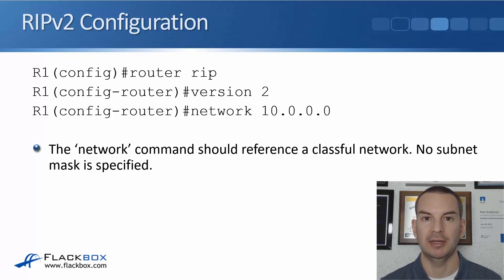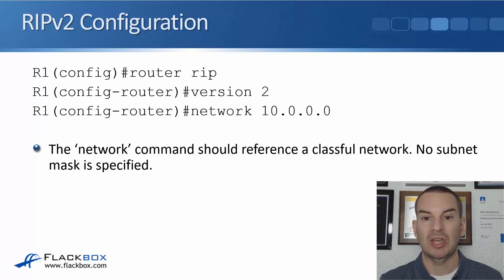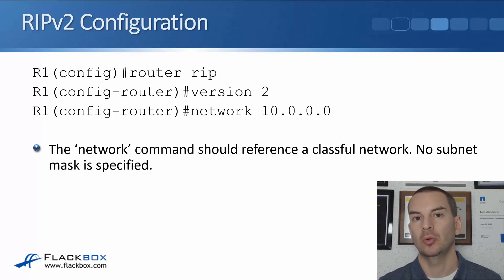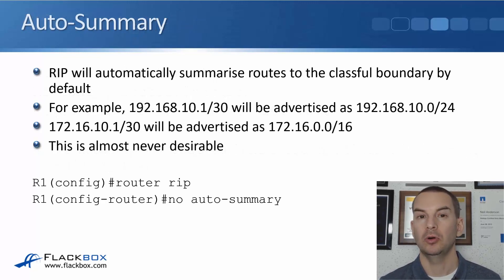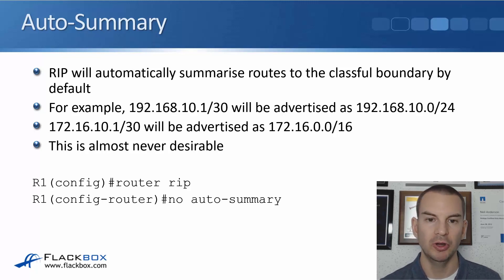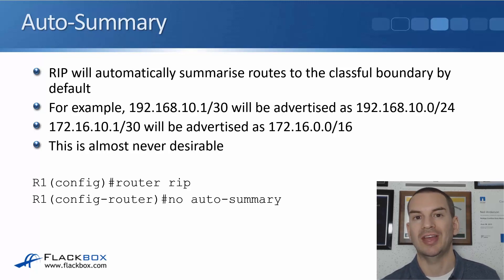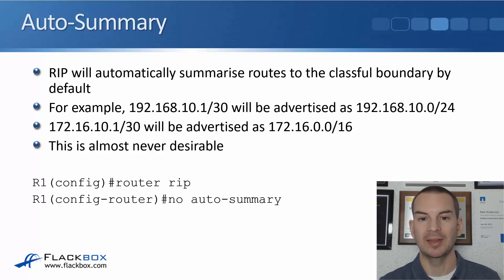The network command should reference a classful network and no subnet mask is specified. So if a router has an interface with IP address 10.1.1.1/24, you don't say 'network 10.1.1.0' — you say 'network 10.0.0.0'. RIP will automatically summarize routes to the classful boundary by default. For example, an interface with IP address 192.168.10.1/30 will be advertised as 192.168.10.0/24.